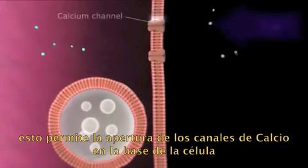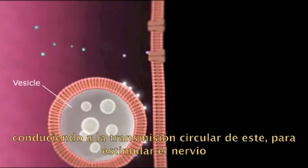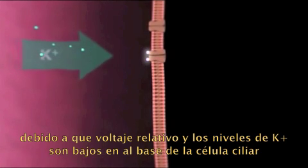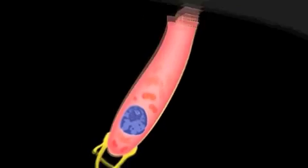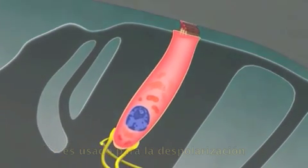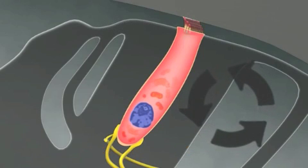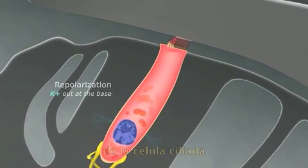This, in turn, opens calcium channels at the basal end of the cell, leading to vesicular transmitter release to stimulate the nerve. Because the relative voltage and potassium levels are low at the base of the hair cell, potassium flows out of the cell. This establishes that potassium flow through the cell is used for both depolarization — potassium in at the apex — and repolarization — potassium out at the base of the hair cell.